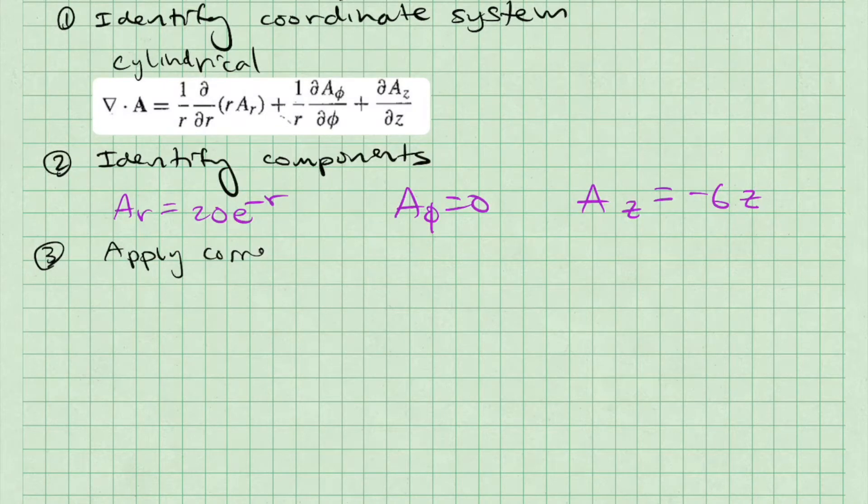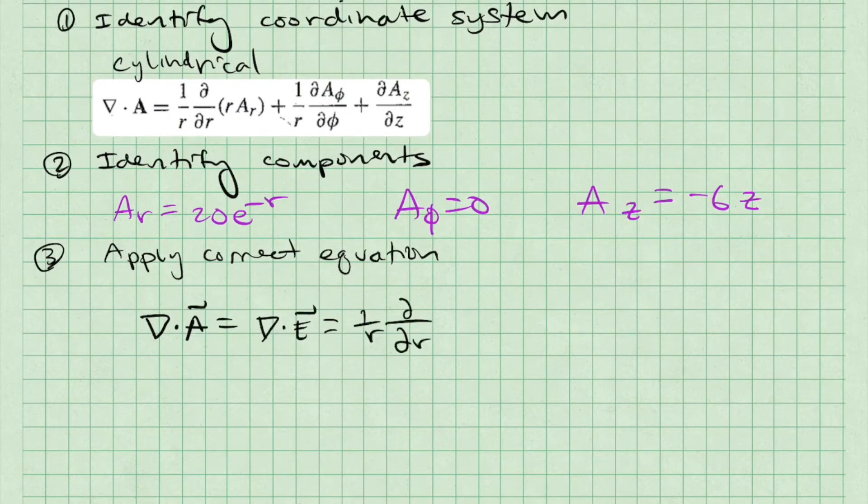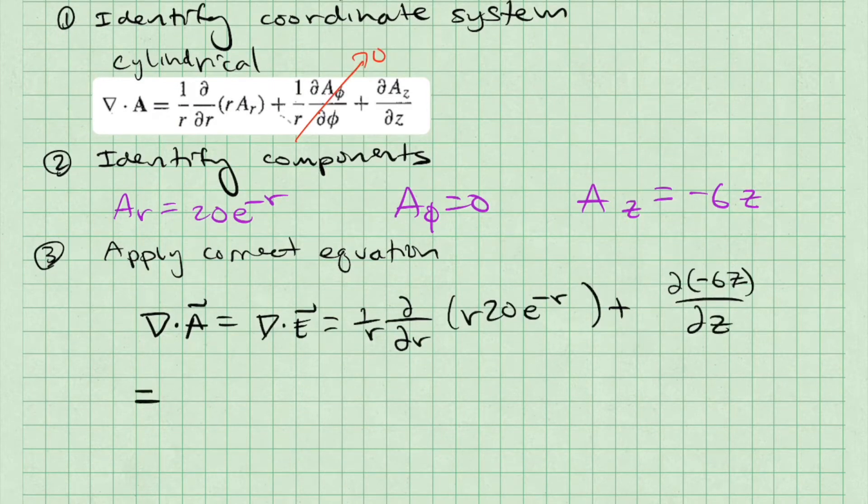Finally, we apply the correct equation for our coordinate system. Basically we are just following the equation and using knowledge from Calculus 1 to compute partial derivatives. For example, if we see the partial derivative with respect to r, we will take the derivative with respect to the variable r, assuming that all else is constant.